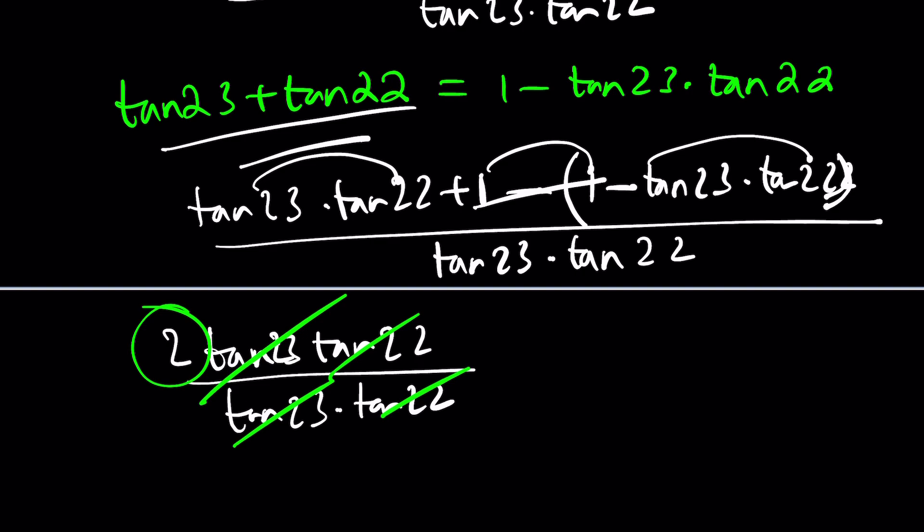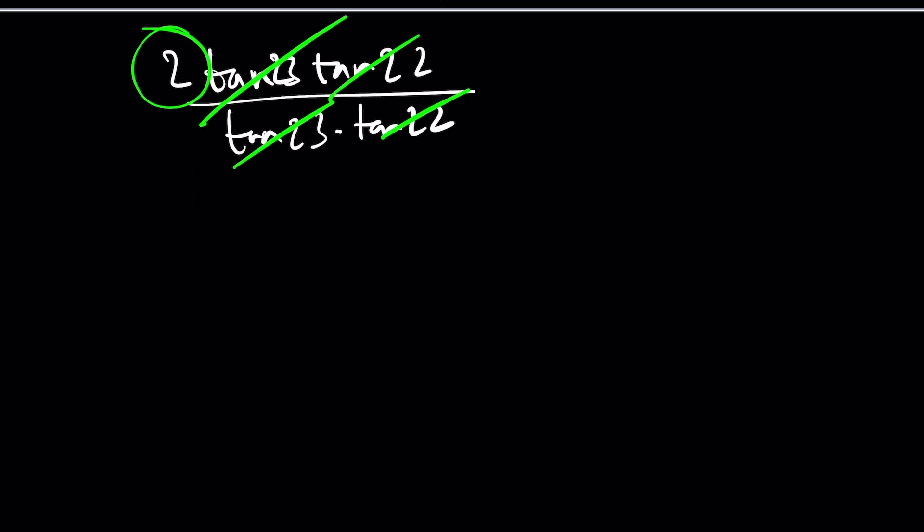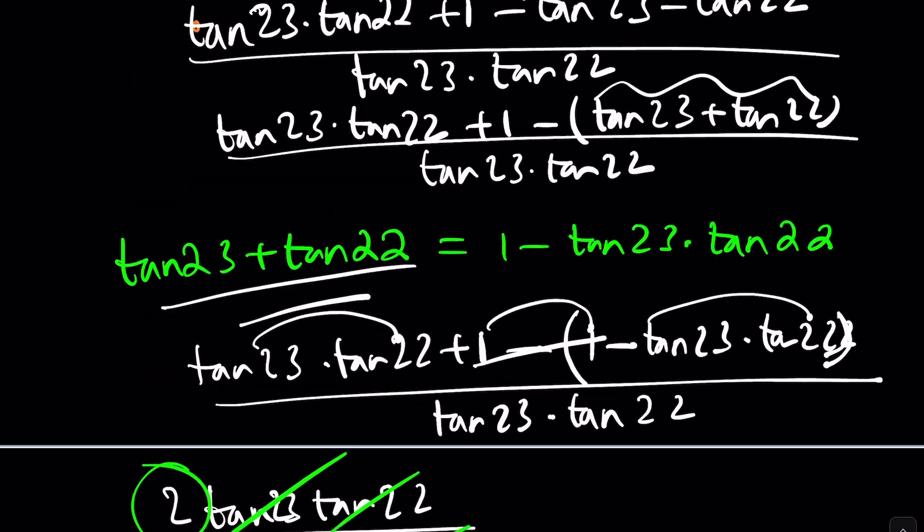Beautiful. So, the answer is 2. Even though we don't know the values of tangent 23 and tangent 22 or the cotangents, we can still simplify this expression. Now, another way to look at this problem, which I'm going to show you real quick, but since this video took a really long time, I'll probably just leave it unfinished. But, let's just start with the original problem.